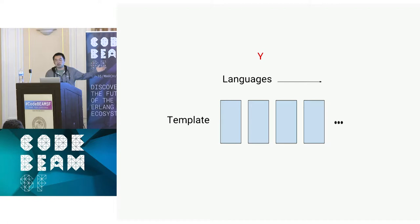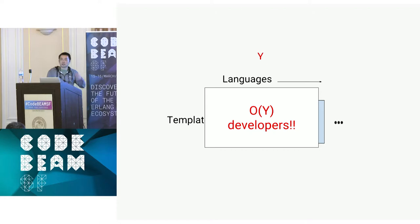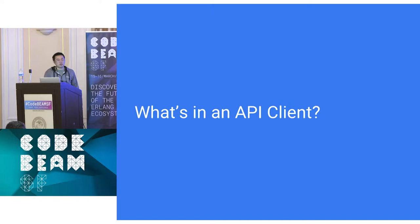Going back to our picture, our previous matrix is now a linear scaling version instead of polynomial. These boxes are a little bigger because there are more upfront costs, but you only have to write it once and it just scales for all the APIs — you get them for free. We're down to just O of Y developers based on the number of languages.